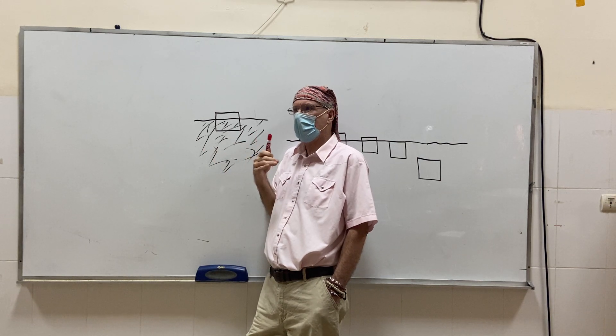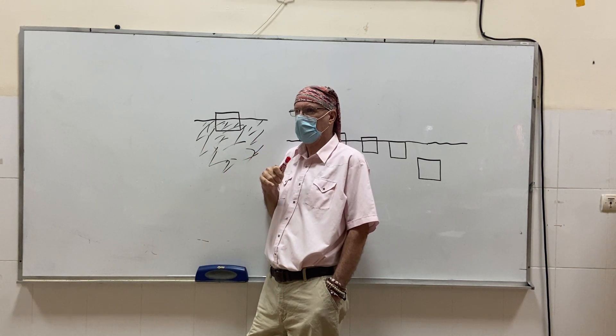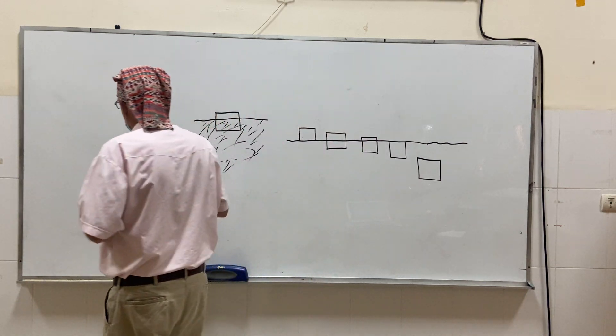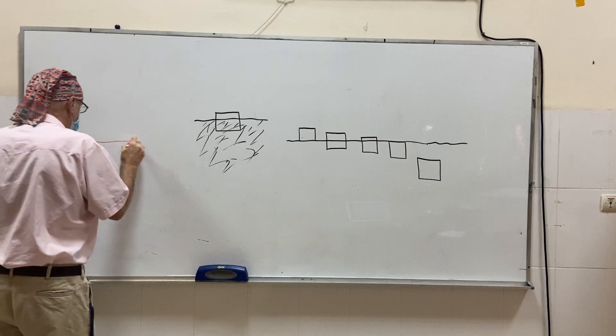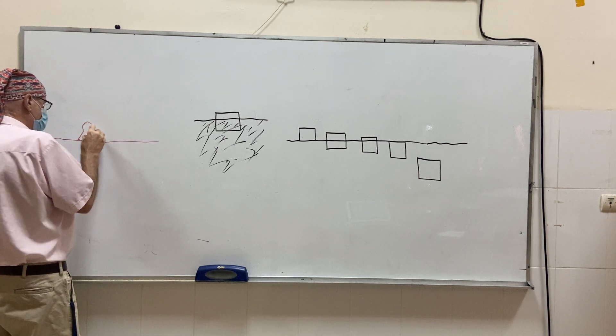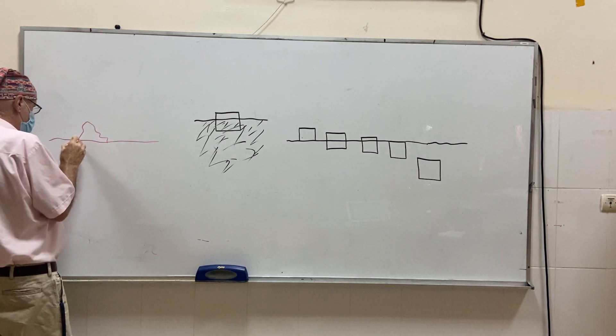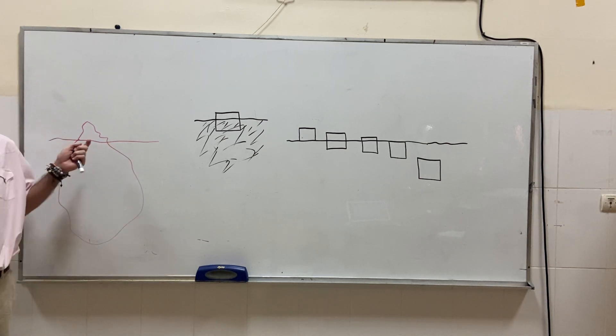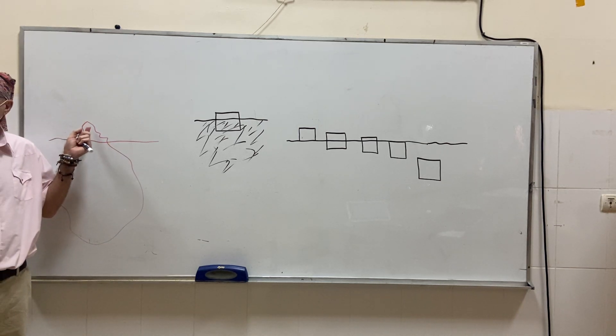Now, an iceberg is very interesting. An iceberg floats like this. Okay? Here I have the iceberg. Let's say it's coming out like that. And it's like that. It's about one-ninth is sticking out. Right.